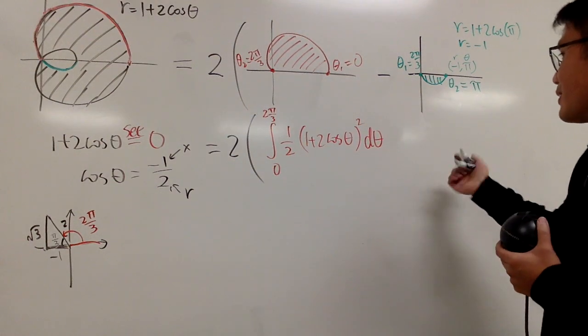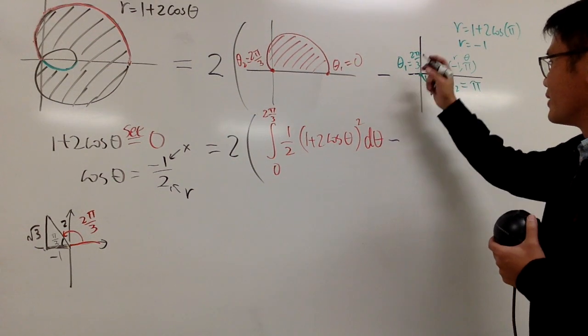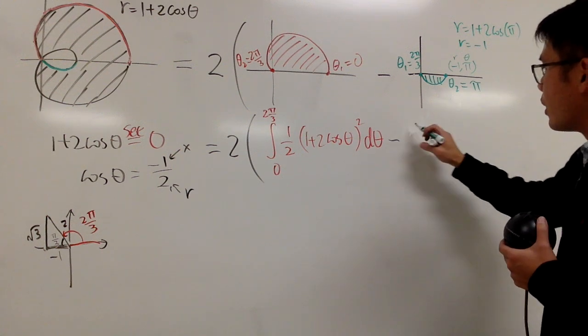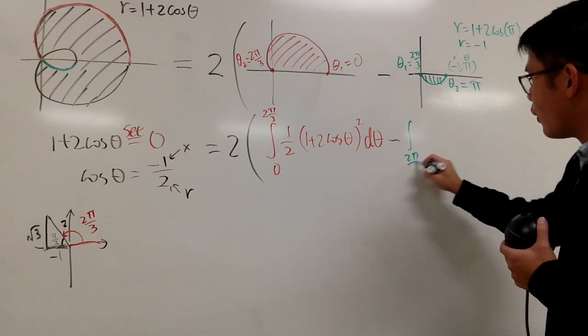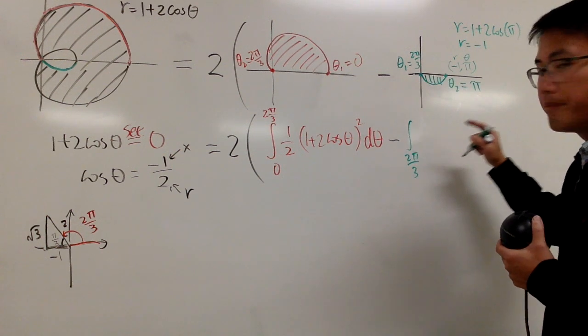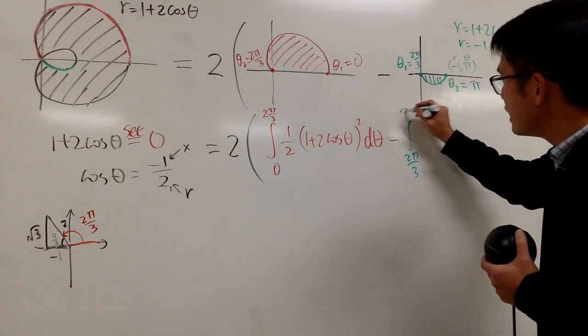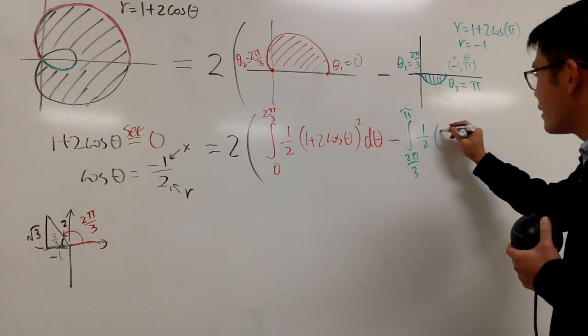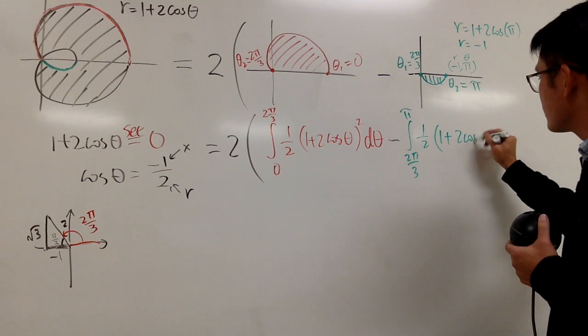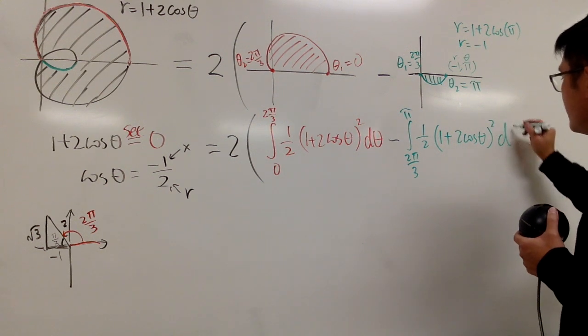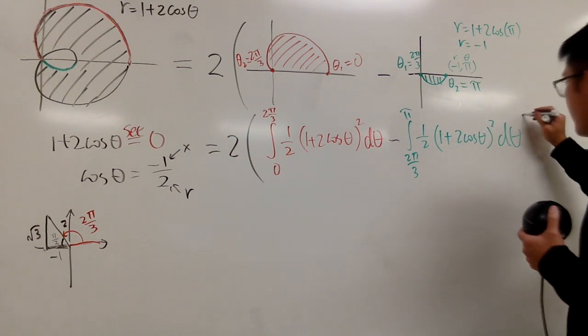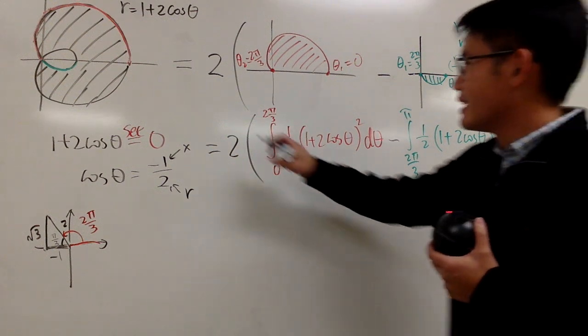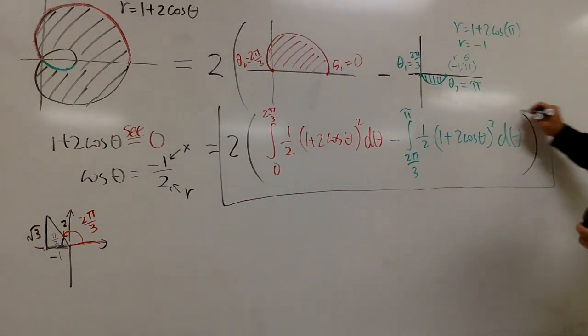So the good thing is that we are pretty much done. I can just subtract the integral from 2 pi over 3, that's my theta 1 here, and then to pi. Same thing. The thing says 1 half, that's 1 half r squared, so 1 plus 2 cosine theta, square that, d theta. And then close the parentheses. This right here is the answer.